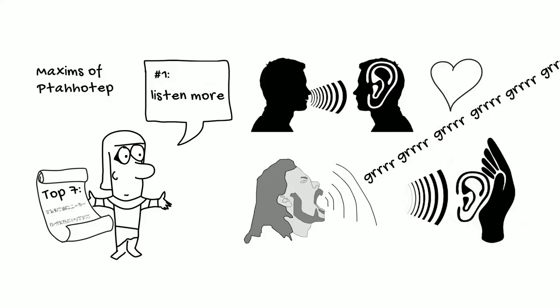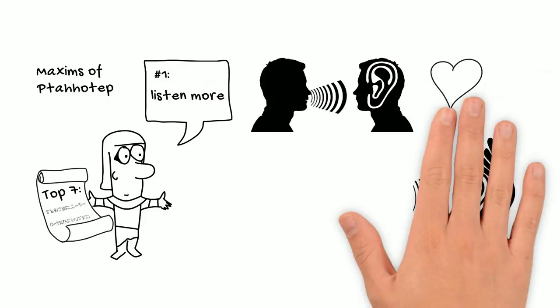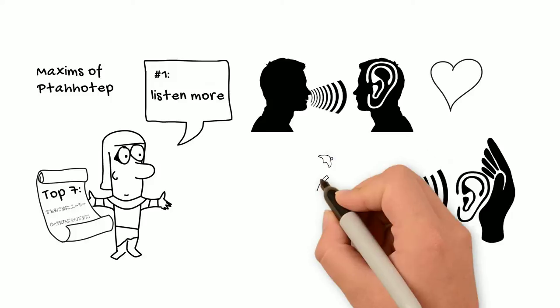In other words, Ptahhotep is saying that if somebody is upset, you should hear them out. Whether you disagree with the person or can or can't help them doesn't really matter. What matters is that listening to them will make them feel better. Interrupting them will help nobody.